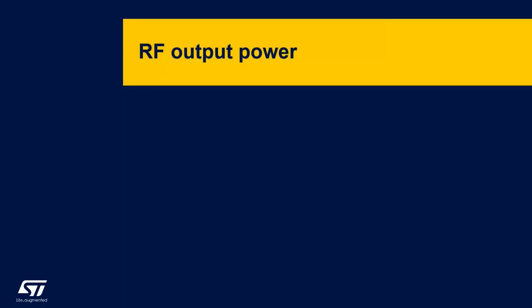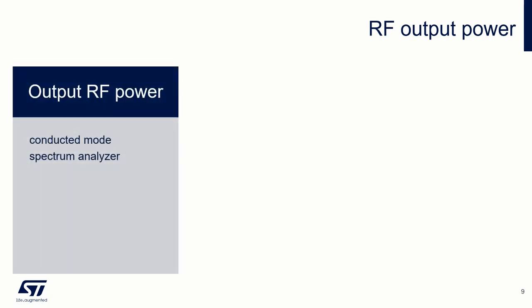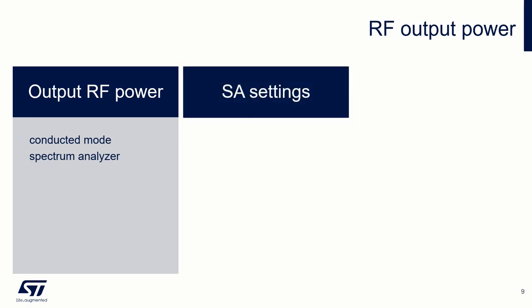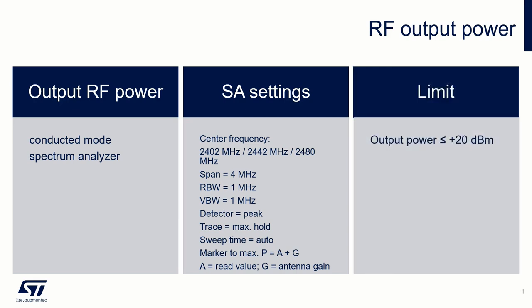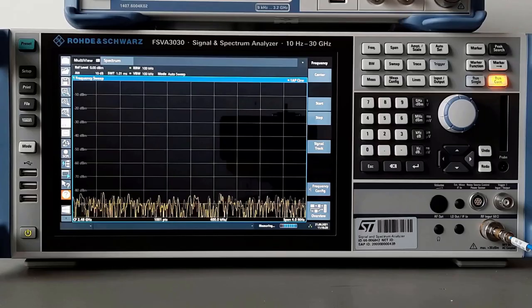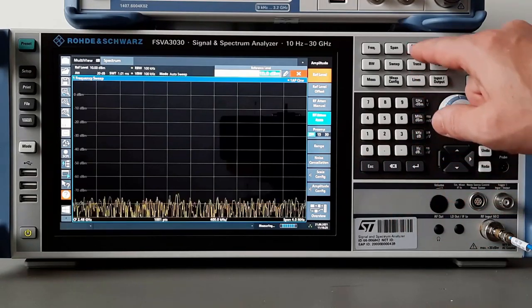The first set of measurements will concern the parameters of the transmitter. We will start with the measurement of RF output power using a spectrum analyzer in conducted mode. We perform the measurements on three channels: low, middle, and high. The signal must be single-tone modulated and the analyzer must be capable of a minimum 1 Mbps. The output power limit is defined as less than plus 20 dBm.